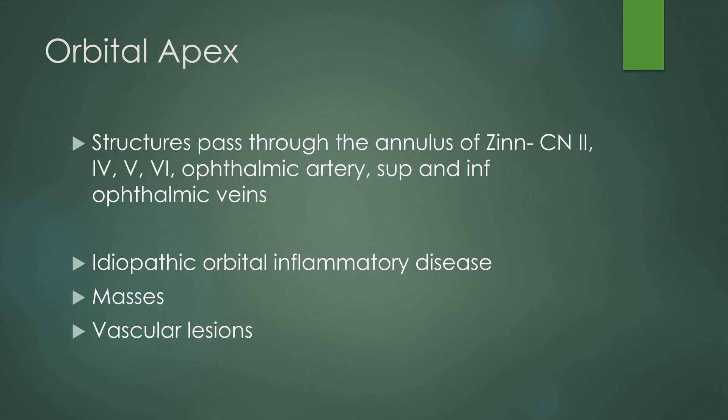Multiple disease processes can occur at the orbital apex. The structures passing through the orbital apex pass through the annulus of Zinn — that's cranial nerve 2, cranial nerve 4, cranial nerve 5, cranial nerve 6, the ophthalmic artery, and the superior and inferior ophthalmic veins.